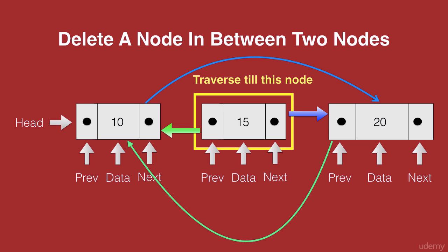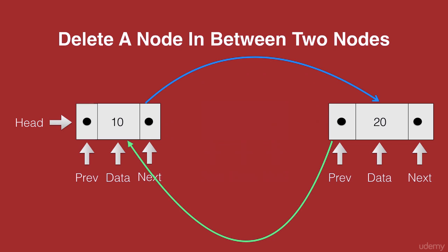Once this connection has been completed, we remove the node from our list and we are left with our doubly linked list with the node with the data 15 removed.